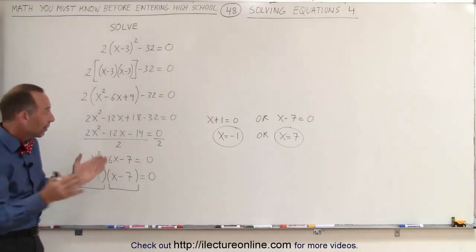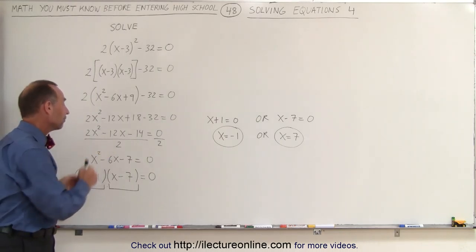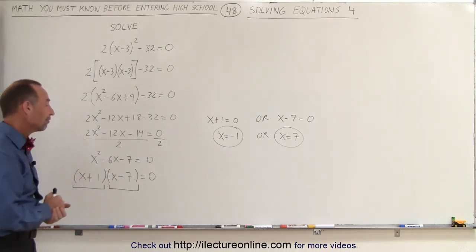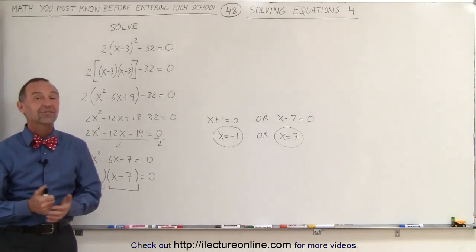Get rid of those parentheses first, combine like terms, then see if you can factor it or use a quadratic formula, and get the final solution. And that's how it's done.